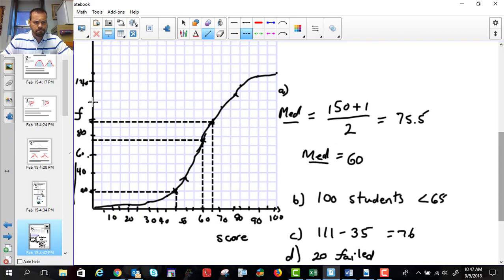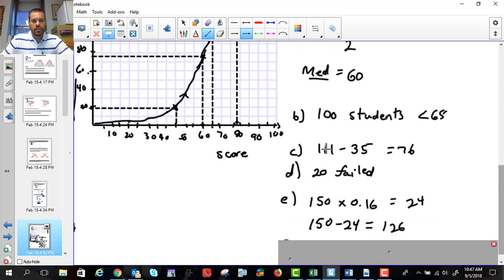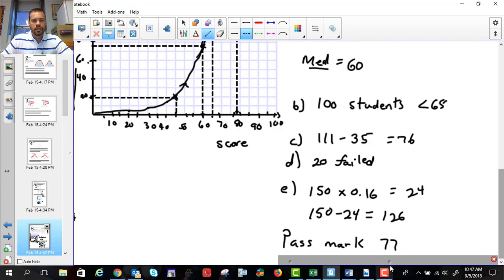So there's 120, there's 130. So 126 is sort of here-ish. And we go down, we get our number. All right, so our pass mark is just a little under 80. That's 75, that's 80, so I said 77.